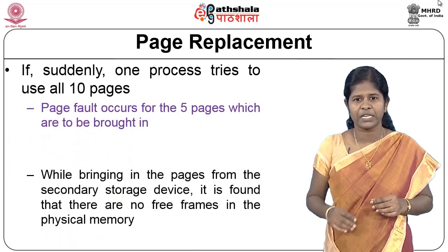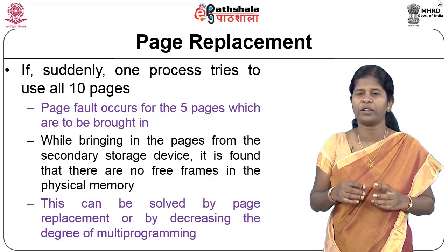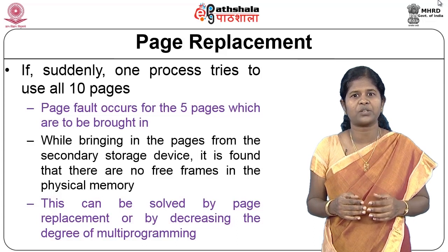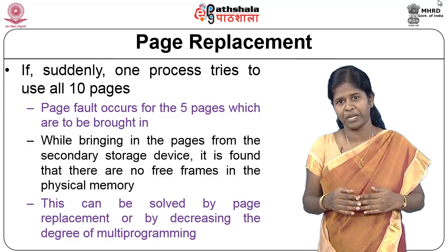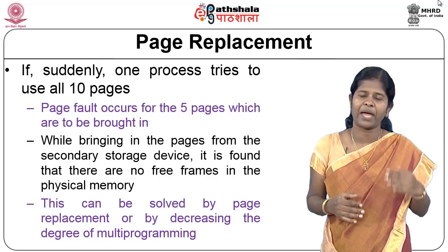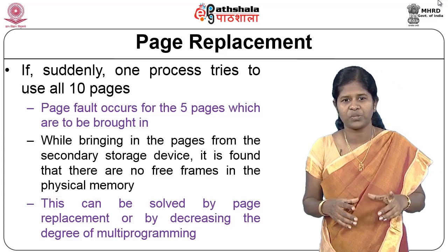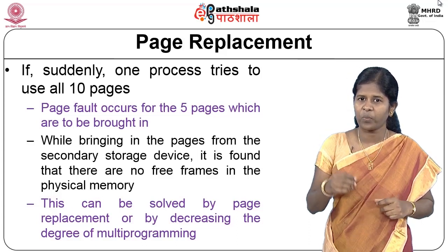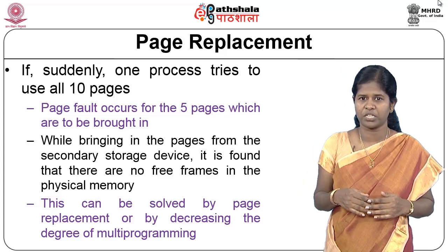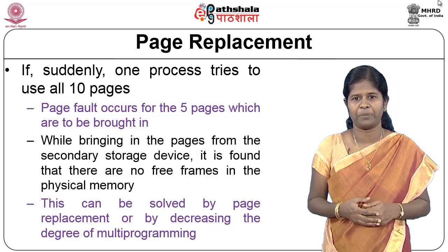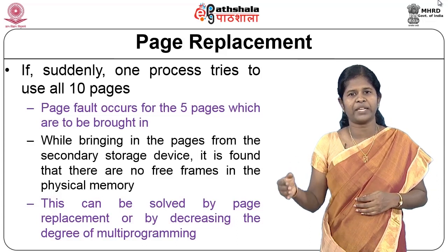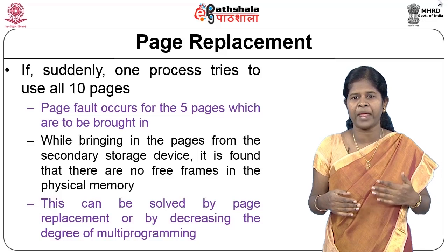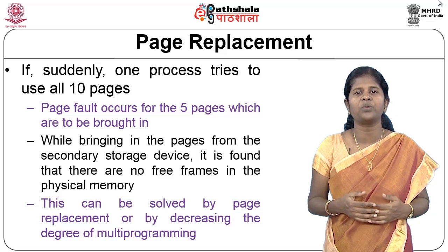At some point, if one process suddenly tries to access more pages — say a process tries to use all 10 pages — there are only 50 physical frames, all currently occupied by pages of different processes. A page fault occurs for those additional 5 pages. When the OS tries to bring them in from secondary storage, there is no free frame in the physical memory to accommodate them.